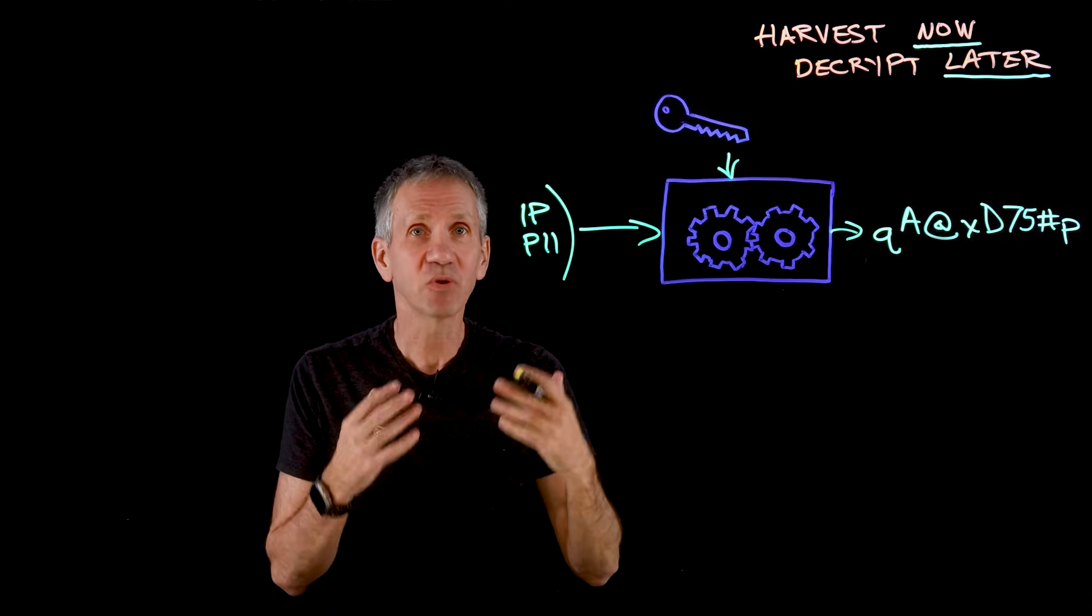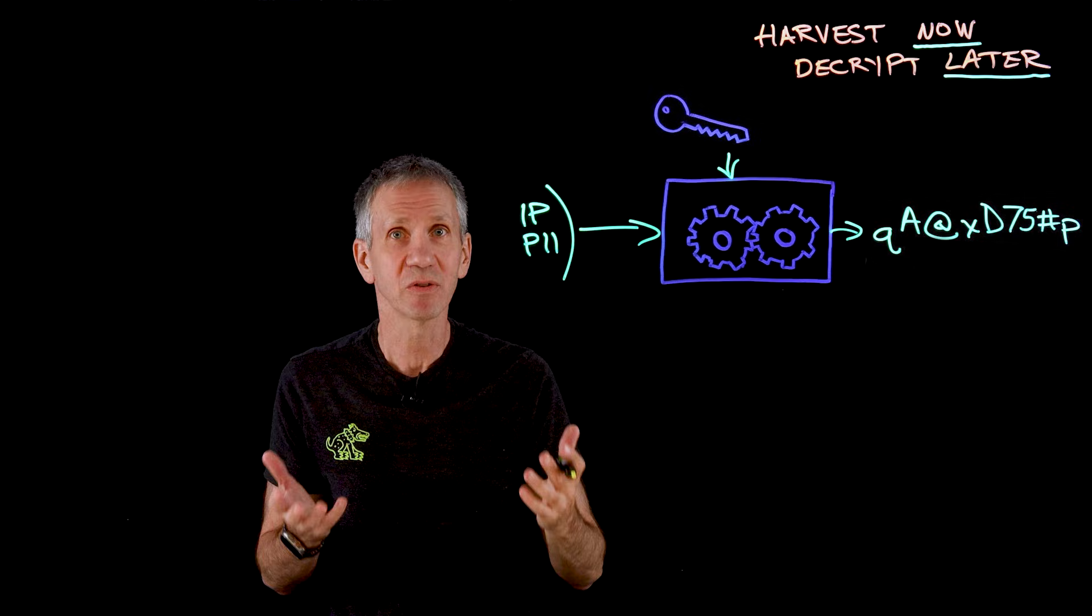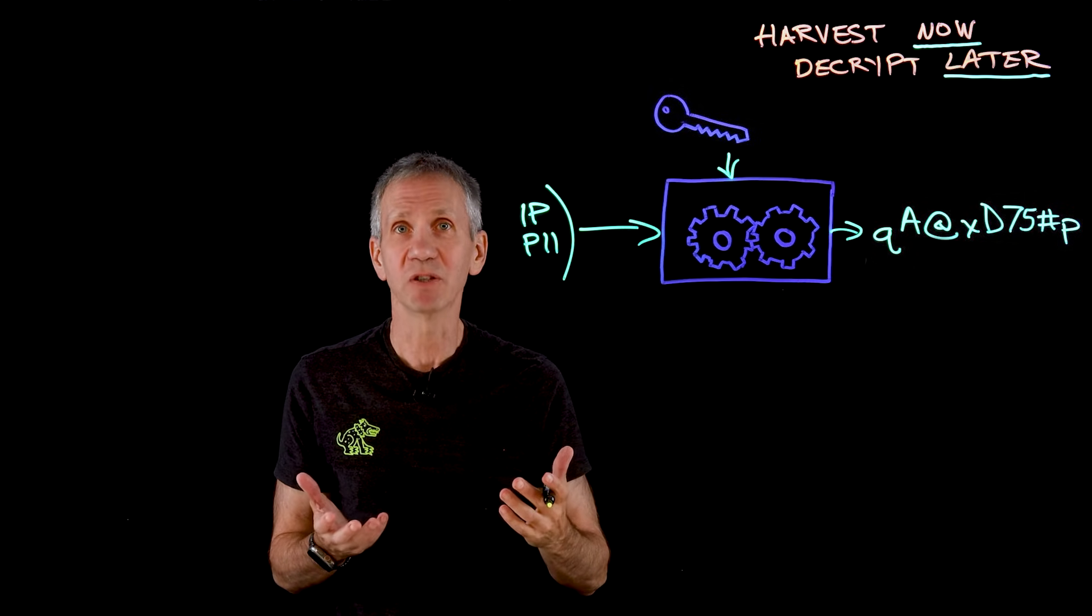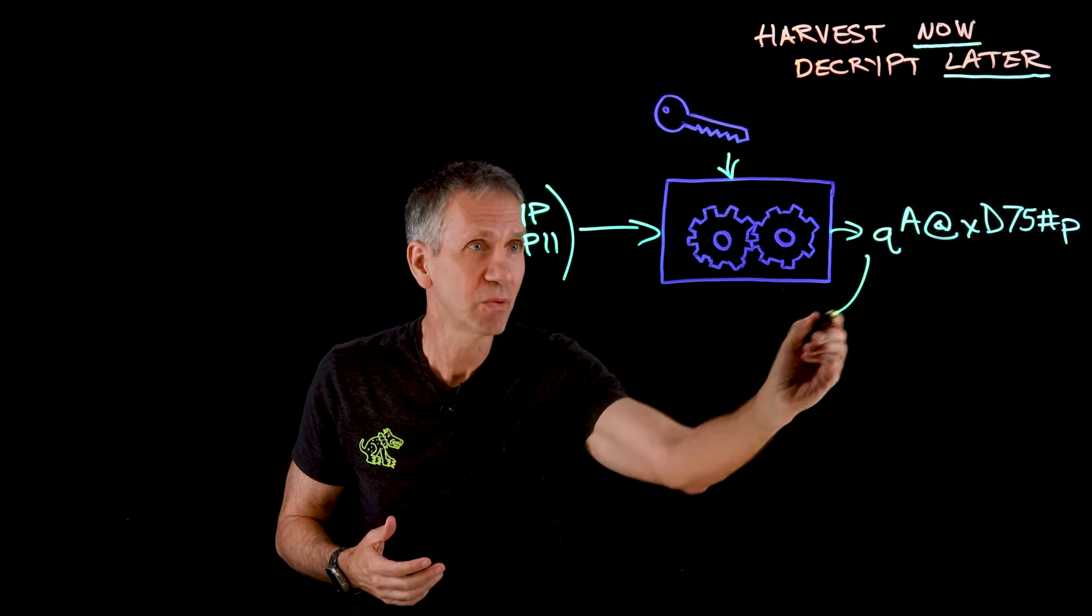And that cipher text can then be transmitted over a public network or stored in a database without fear that an attacker will be able to read it. Then when we need to reverse the process for an authorized user, we decrypt the cipher text and get back to the original message.